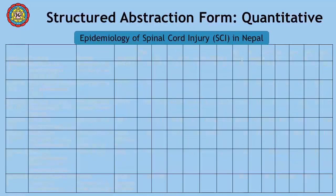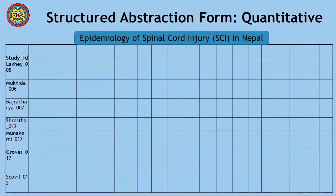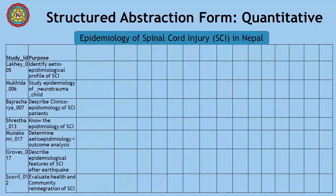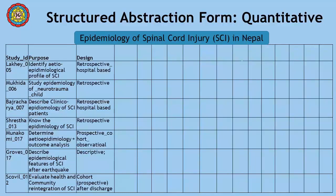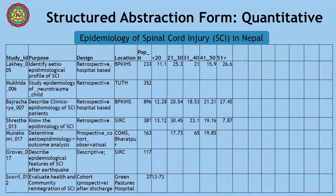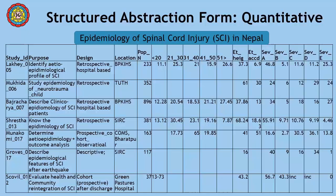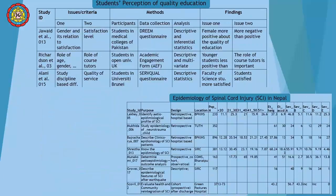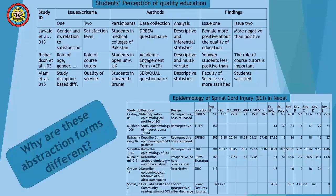The structured abstraction form for the second review looks like this. Here we included study identification, purpose of the study, research design, location, population, different age groups, etiology, and injury severity. You may have noted substantial differences between the two forms — can you guess why?